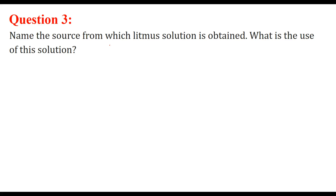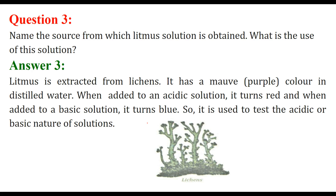Name the source from which litmus solution is obtained and what is its use? Litmus comes from a kind of plant called lichens. It has a purple — or mauve — color in distilled water. When added to an acidic solution it turns red, and when added to a basic solution it turns blue. We use this litmus test to determine whether a solution is acidic or basic.